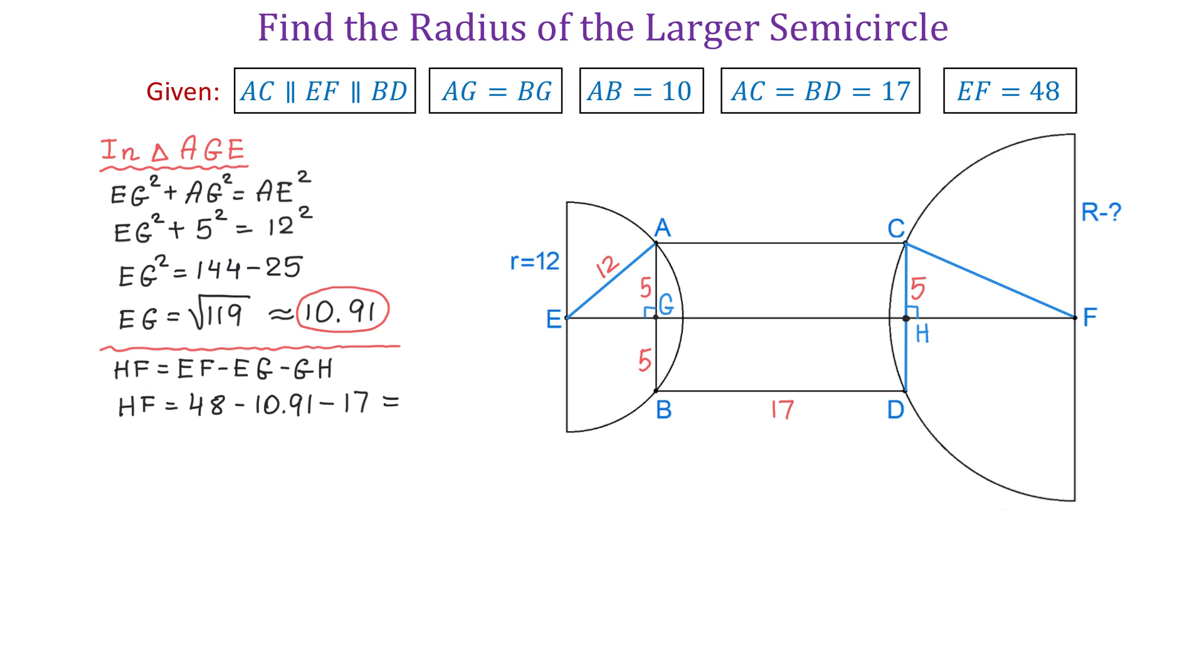And now, once we know HF, we will use the Pythagorean theorem to find CF. So we will write that HF squared plus CH squared equals CF squared. Then we will replace HF with 20.09 and CH with 5. And now, 20.09 squared plus 5 squared equals CF squared. Then CF equals square root of 20.09 squared plus 5 squared, and this is approximately 20.7.